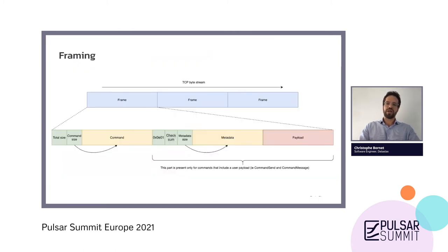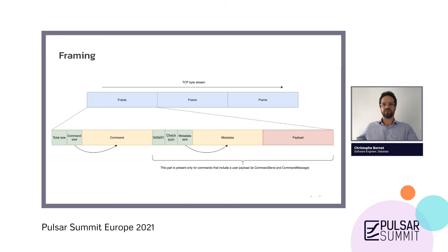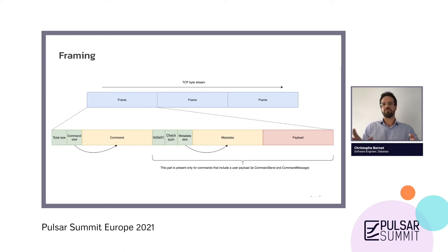About the protocol frame: we get a byte stream from TCP and we need to segment it into frames. This is done by having the first bytes of the frame represent the total size of the frame, so we can know when a frame will end and when the next one will start. Inside, the frame is divided between a command and an optional message, the message being composed of the metadata of the message and the payload.